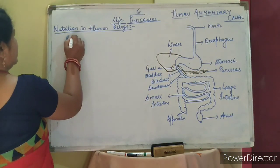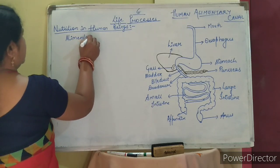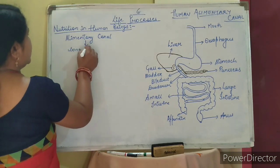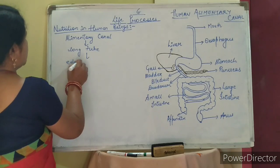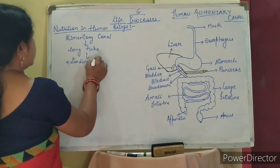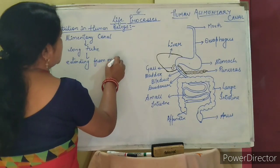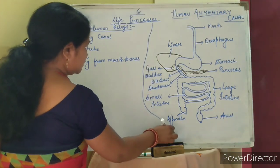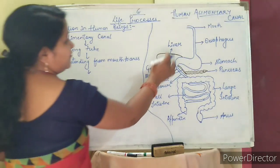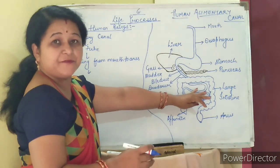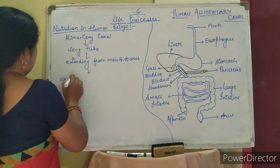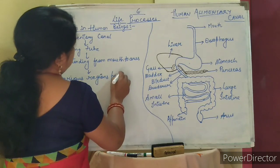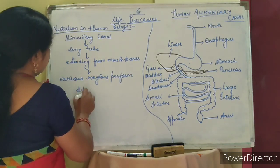First, we will study about the alimentary canal. What is the alimentary canal? It is a long tube extending from mouth to anus. Different regions are present in it and they are specialized for performing different functions — various regions perform different functions.